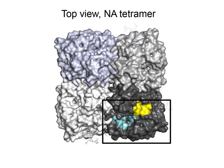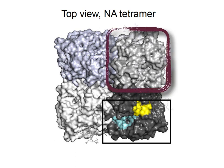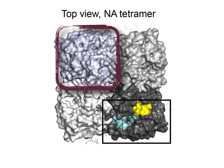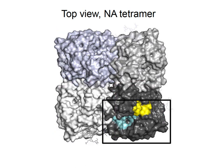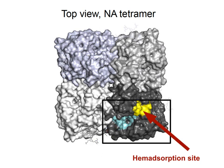NA exists in a tetramer, so there are four protomers in that structure. NA9 is also interesting because it has not only an enzymatic active site, but it also has a hemoabsorption site, which may contribute to attachment. And so these are interesting sites that possibly could be recognized by antibodies.